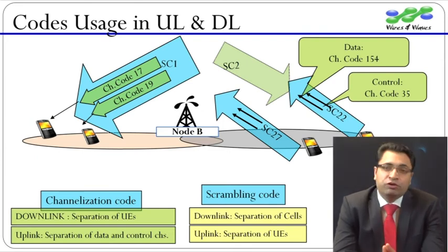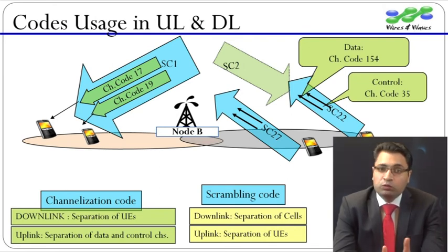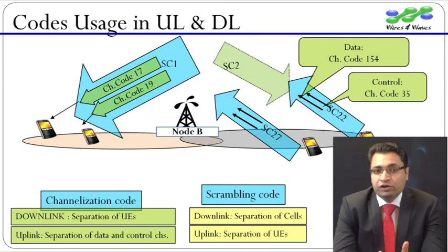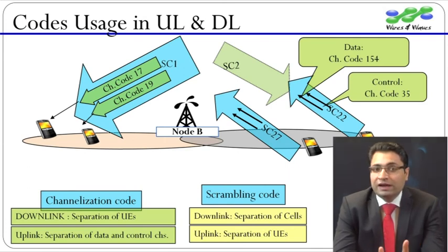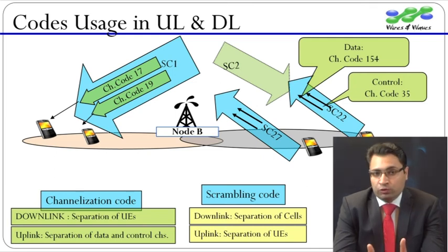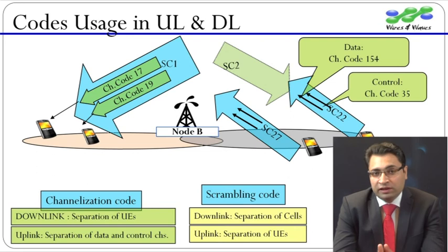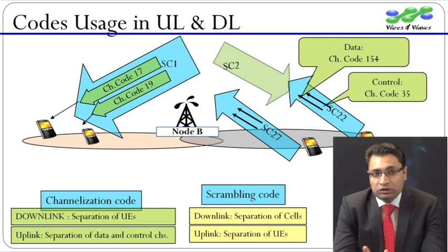Now let us introduce two more UEs in the left cell. From this example, we can say that in downlink, channelization codes are used as a user's identity on the physical layer. These codes often face congestion in high-loaded cells, therefore RNC has to very carefully allocate these codes. By observing the uplink behavior of users in the right cell, we can say that in uplink, channelization codes are used to separate control and data channels from the same UE.